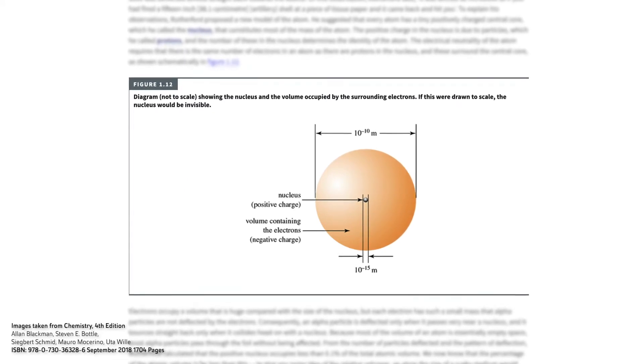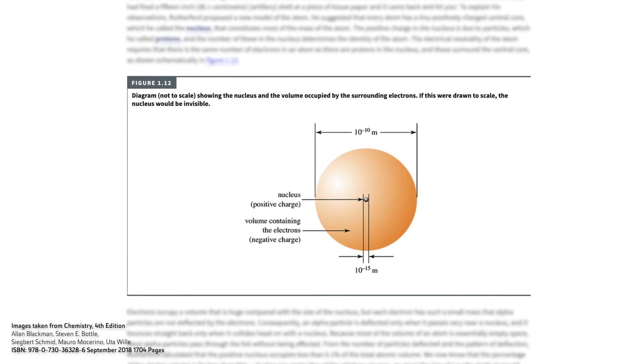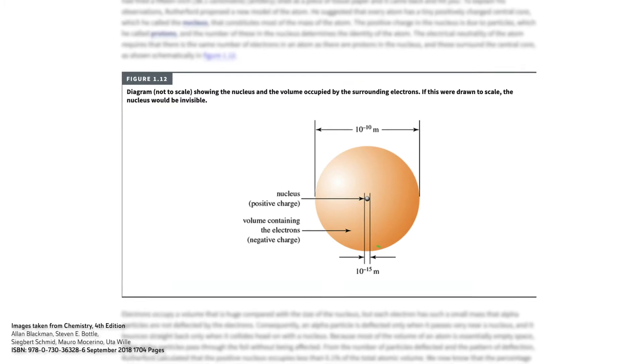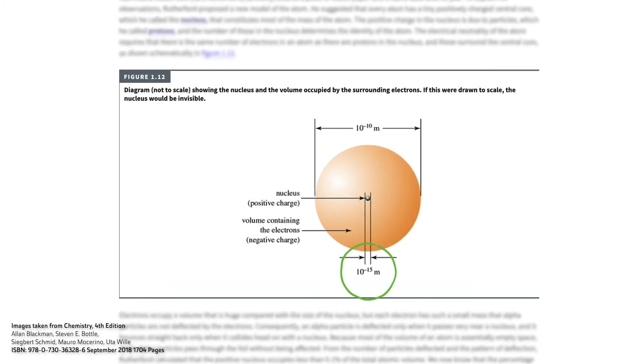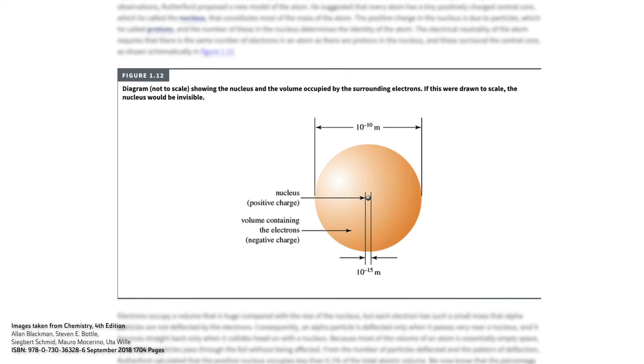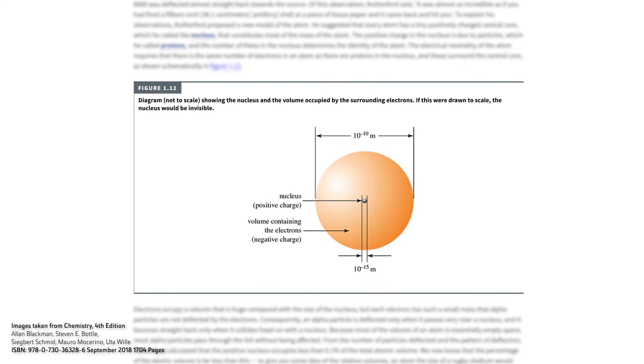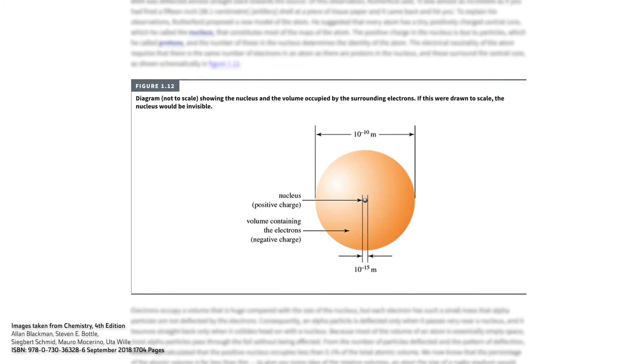When we say most of the atom is empty space, it really, really is. A typical atom has a diameter of around 10 to the minus 10 metres, while the nucleus has a diameter of around 10 to the minus 15 metres — that's five orders of magnitude. In practical terms we can visualise, we could liken the atom to a sports stadium, with a pea in the middle representing the nucleus. So pretty much all of the atom is absolutely empty space.